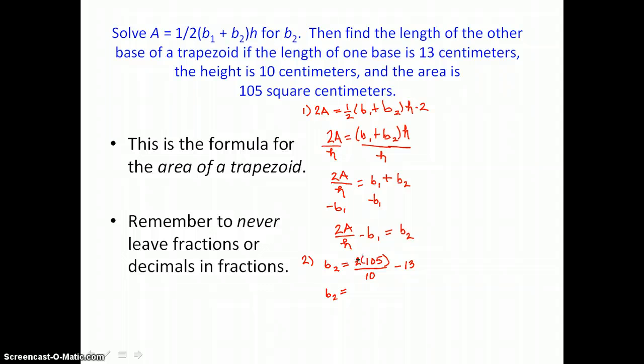we can cancel this factor of 2, it goes into 10 five times. And then we can cancel this factor of 5 because it goes into 105 twenty-one times. So it looks like we're left with 21 minus 13, or 8. So to answer the question, find the length of the other base of a trapezoid. That length would be 8 centimeters.